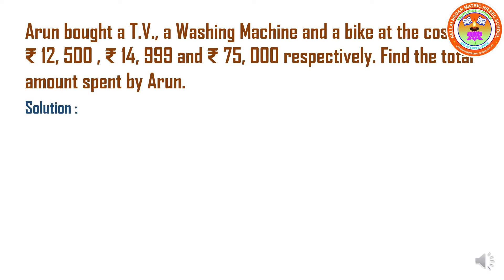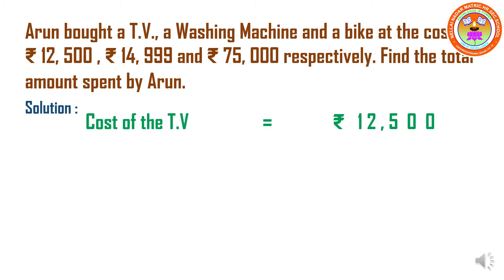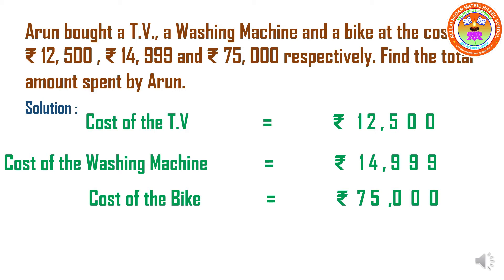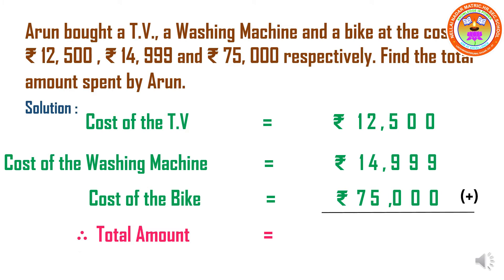Now let us move on to the solution part. There are three things: TV, washing machine, and a bike. The cost of all three items have been given and we have to find the total amount spent by Arun. Cost of the TV is equal to Rs. 12,500. Cost of the washing machine is equal to Rs. 14,999. And cost of the bike is equal to Rs. 75,000. Now we have to find the total amount, so we are going to add. We will start the addition in the ones place: 0 plus 9 is 9, and 9 plus 0 is 9.